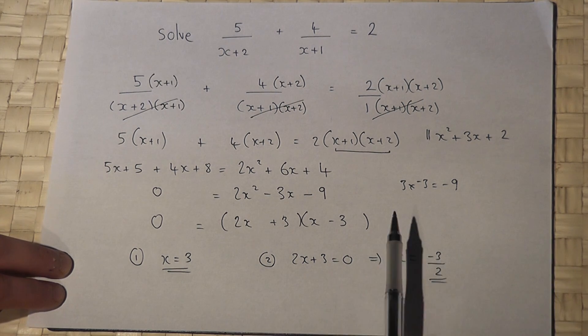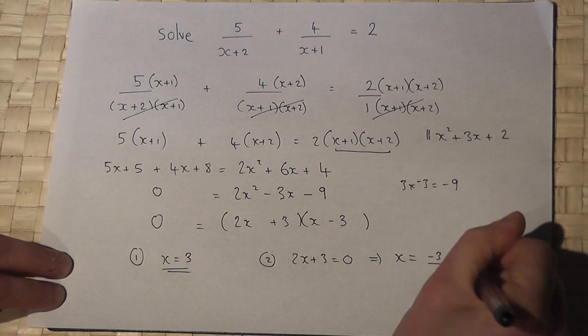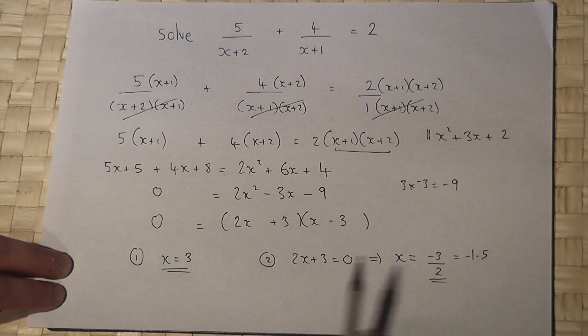So the two solutions are x equals 3, or x equals minus 3 over 2, which is minus 1.5.